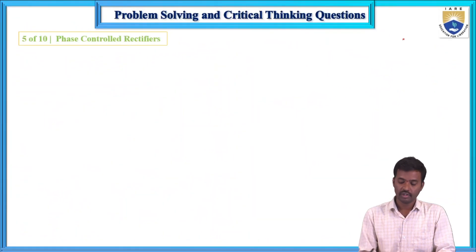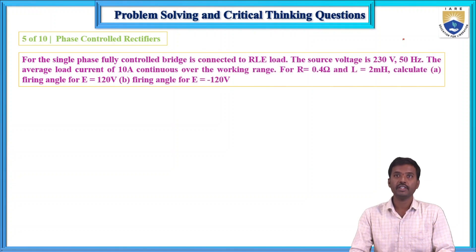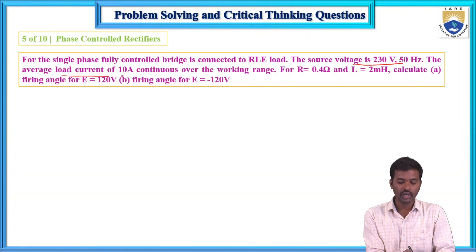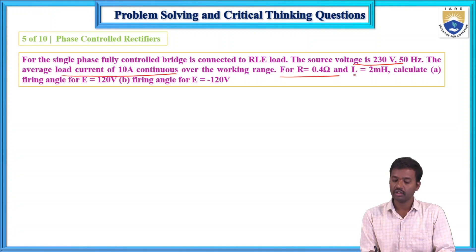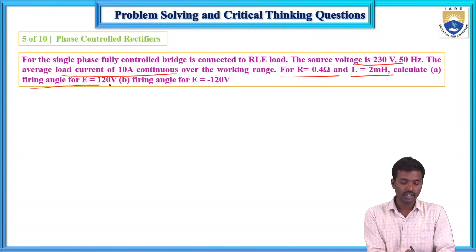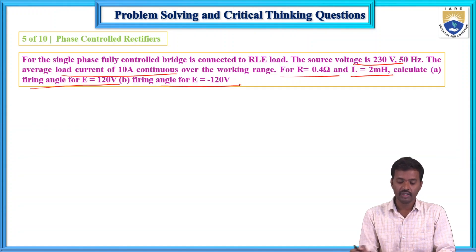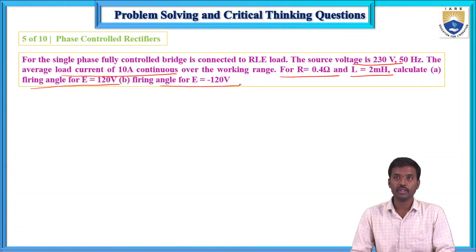Fifth problem: for a single-phase fully controlled bridge connected to an RLE circuit, the source voltage is 230 volts, 50 Hz. The load current is 10 amps, R equals 0.4 ohms, L equals 2 millihenries. Two cases are given: E equals +120 volts and E equals −120 volts. Find the firing angle for each case.